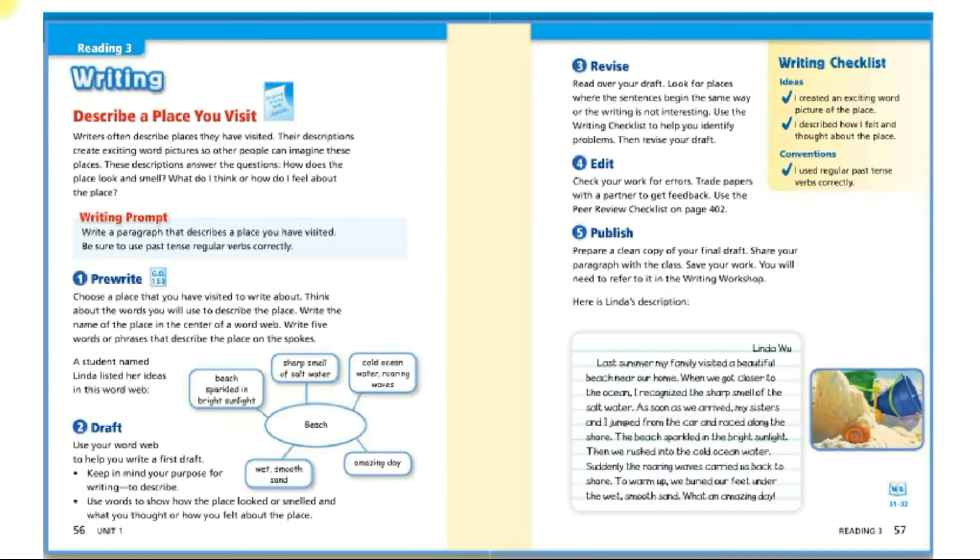Now, after you do that, you're gonna do a draft. A draft is a rascunho. Use your word web to help you write a first draft. Keep in mind your purpose for writing is to describe. Use words to show how the place looked or smelled and what you thought or how you felt about the place. Você vai escrever sobre como você sentiu, o que você lembra, como estava o cheiro, como o lugar é. Tenta o máximo de detalhes que vocês conseguirem. Revise: a revisão nada mais é do que você colocar esse draft, esse rascunho, com palavras mais apropriadas, criar frases completas e não só word web ou palavras mais espaçadas.